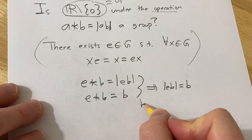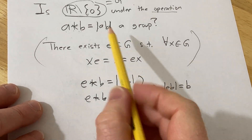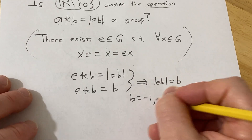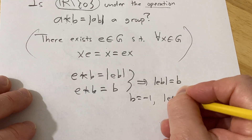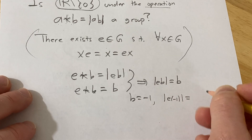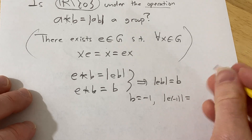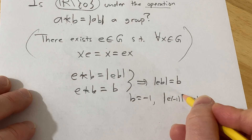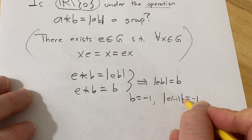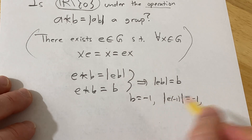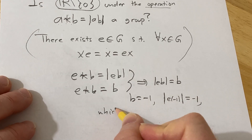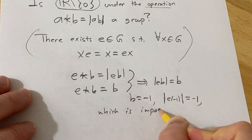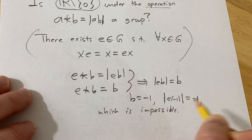If we take b equals negative 1, which is an element in this set, that would imply we'd need the absolute value of e times negative 1 to equal negative 1. But the absolute value of anything can't be negative — that's impossible. So there cannot exist an identity element.